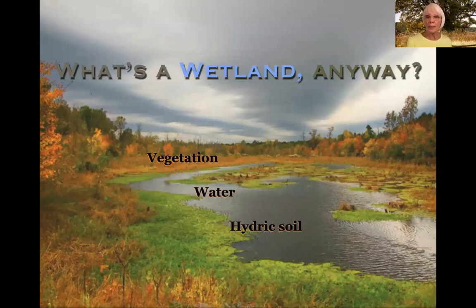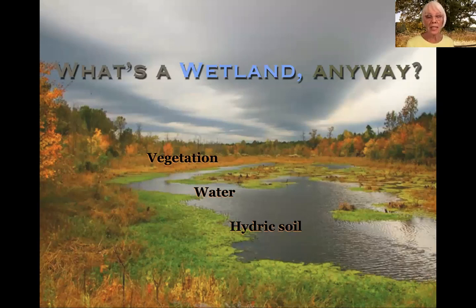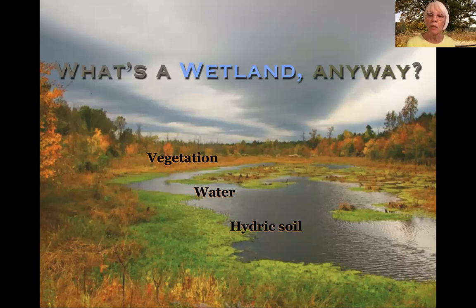To define a wetland is really simple. It's as its name suggests — wet land. Not just a little damp, but soggy, saturated, waterlogged, really wet. We call it hydric soil. And water is either covering that hydric soil, or the water table is right up near the surface.